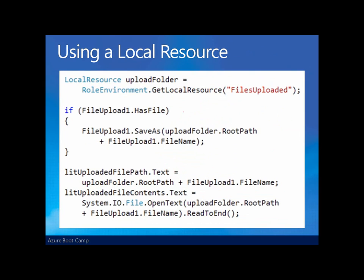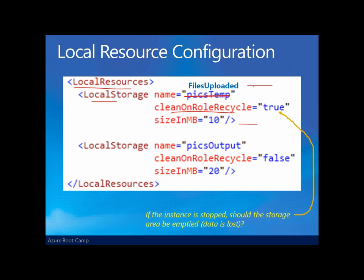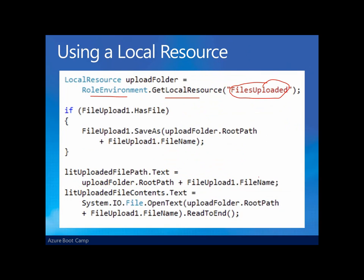How do we use that local storage? We'll use the role environment object to get the local resource by name — in this case, 'files upload' — which is the same name defined in the XML configuration file. Once we have that local resource, we can use it just as we would any kind of file space on our hard drives, uploading or downloading files into that space. Remember, however, it is volatile — should the role go down, that data is lost.